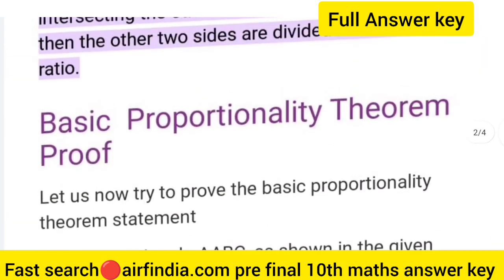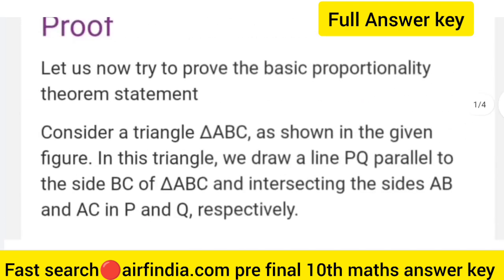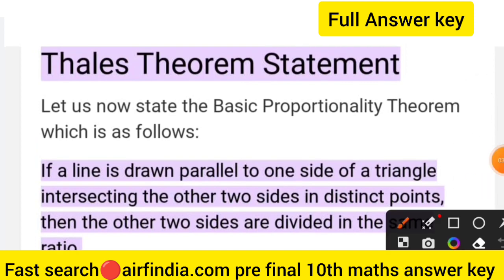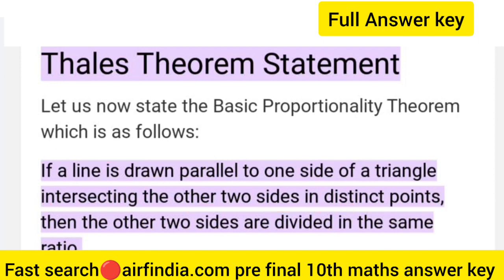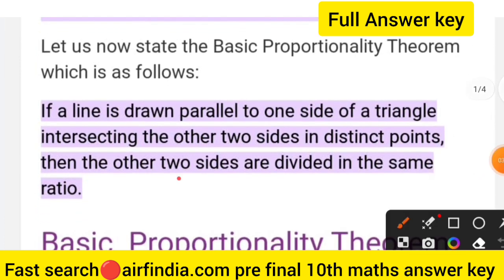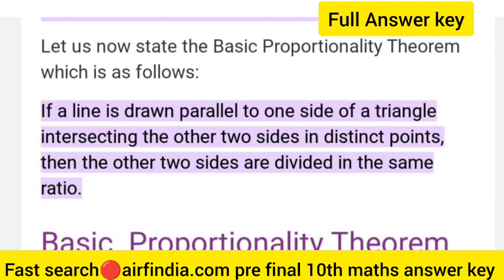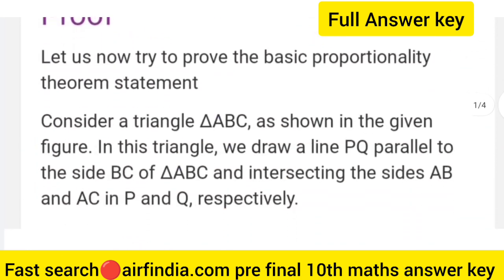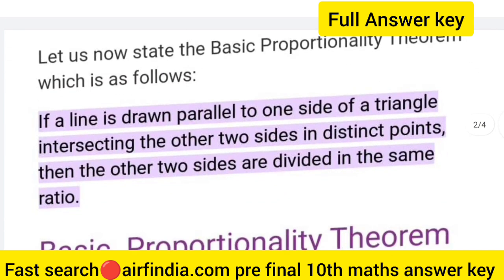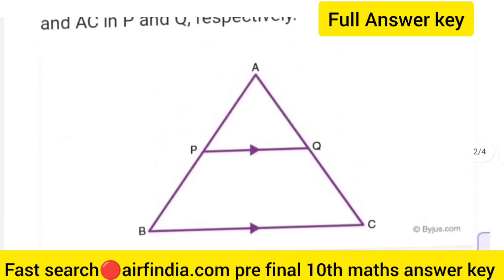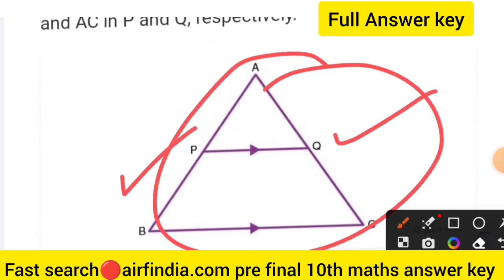Question 10: you have to state the theorem only, not prove it. The Basic Proportionality Theorem states: if a line is drawn parallel to one side of a triangle intersecting the other two sides in distinct points, then the other two sides are divided in the same ratio. Remember this is only the statement. Make a diagram to support it.